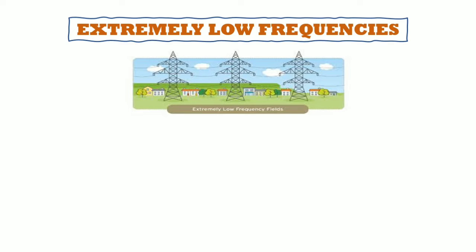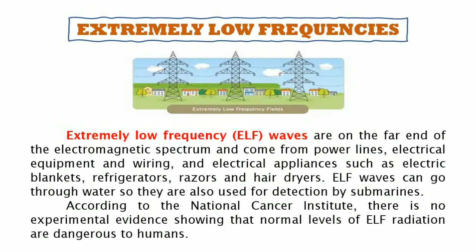Extremely low frequency (ELF) waves are on the far end of the electromagnetic spectrum and come from power lines, electric equipment and wiring, and electrical appliances such as electric blankets, refrigerators, razors, and hair dryers. Extremely low frequency waves can pass through water, so they are also used for detection by submarines. According to the National Cancer Institute, there is no experimental evidence showing that normal levels of extremely low frequency radiation are dangerous to humans.